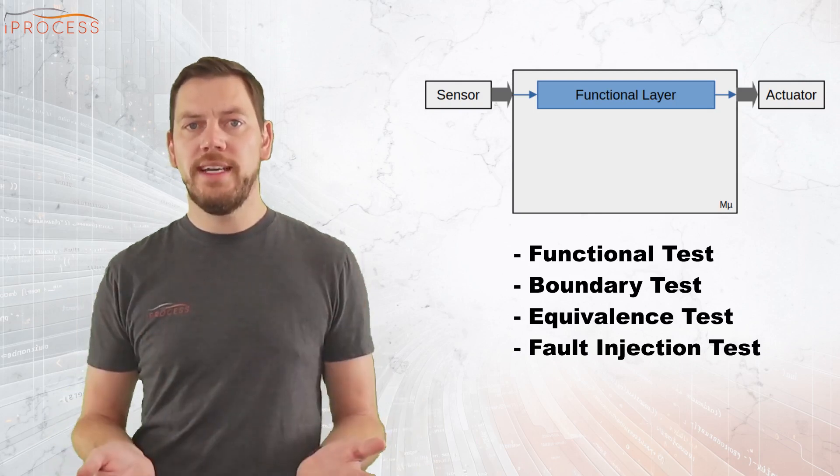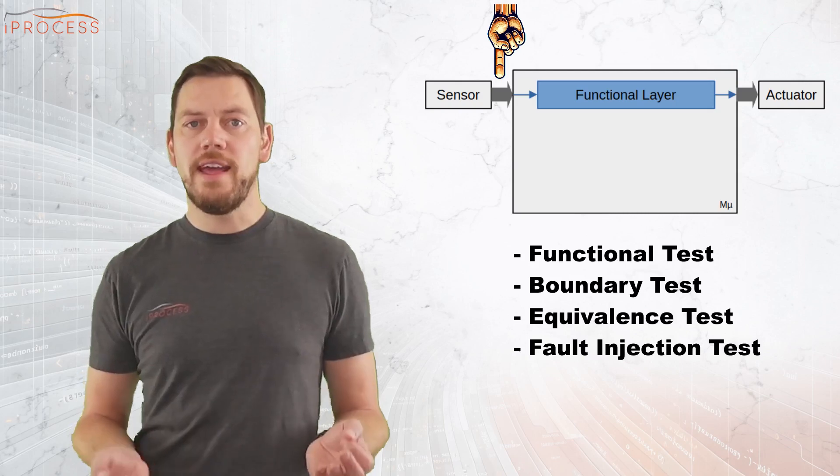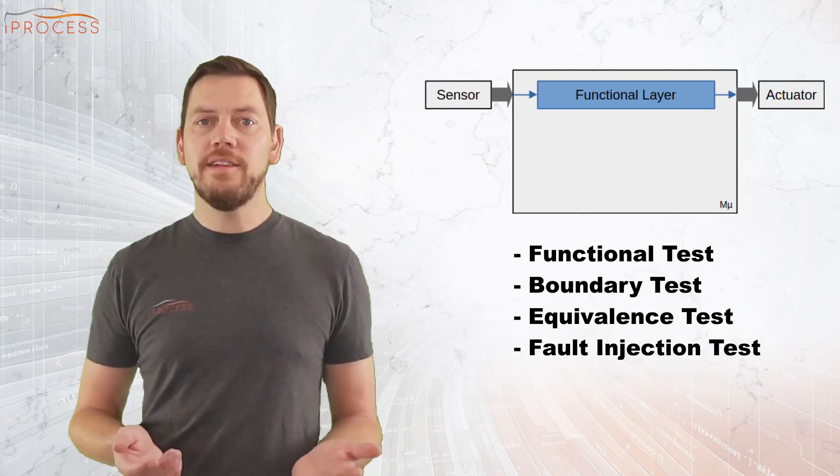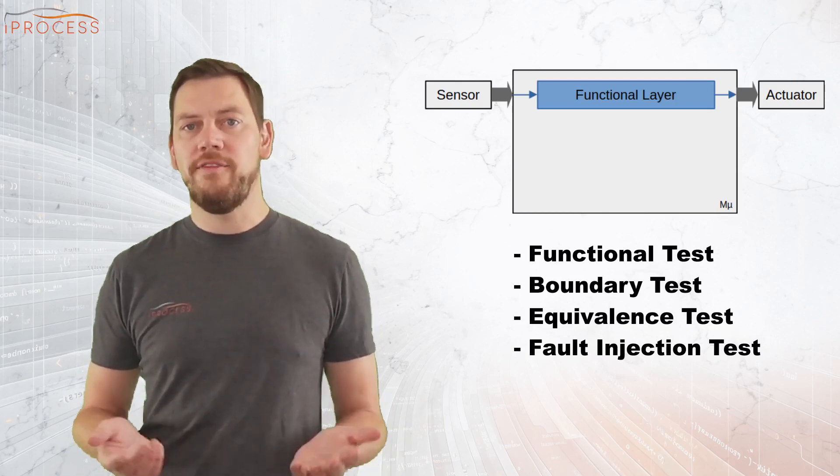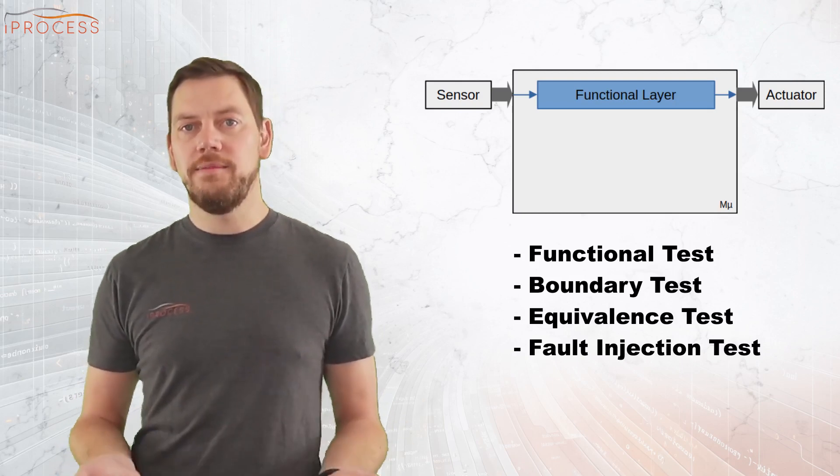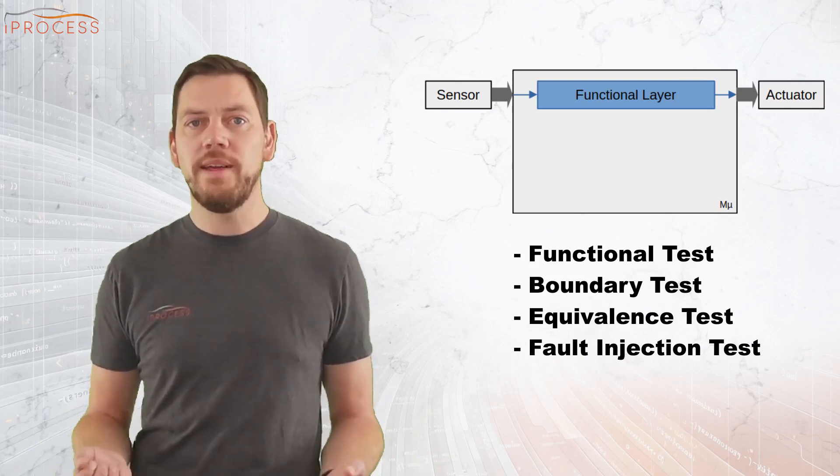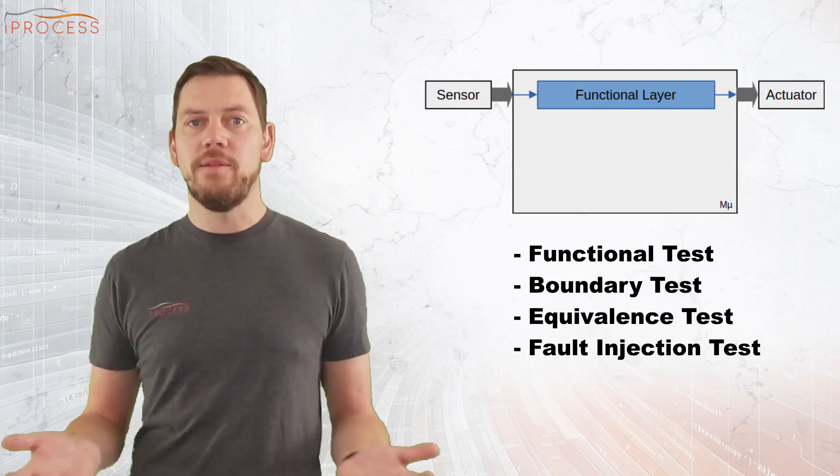The fault injection test either modifies something on the input of the channel or something on the actuator or its driver and tests the functional layer detects that malfunction and shuts the system down accordingly. This can be done on software level, but it also can and has to be done on a system level where physics plays into the behavior.